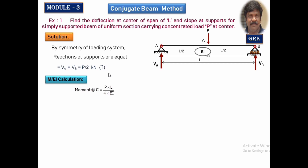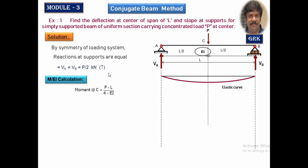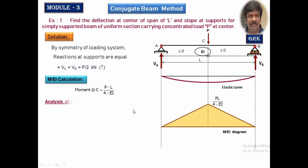The moment at the center will be equal to PL by 4 — that is the bending moment — and dividing by EI, we call it the M by EI calculation. We are going to draw the elastic curve for this to get the slope, then draw the M by EI diagram as shown in the figure. PL by 4 is the maximum moment at the center.